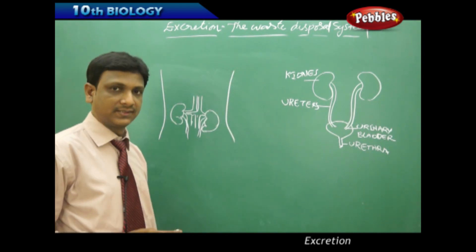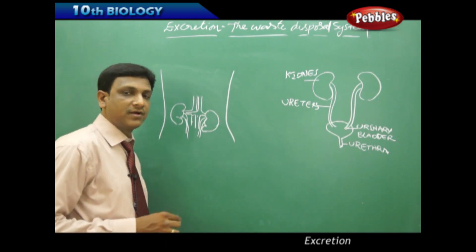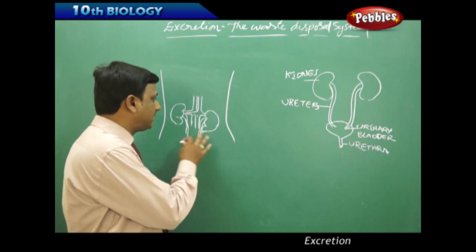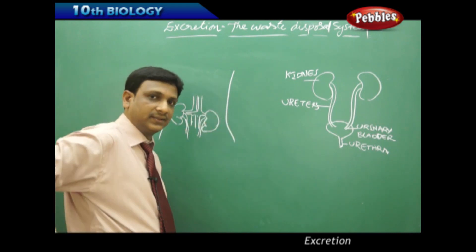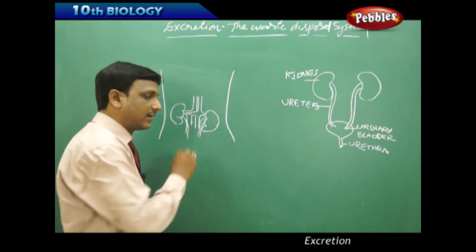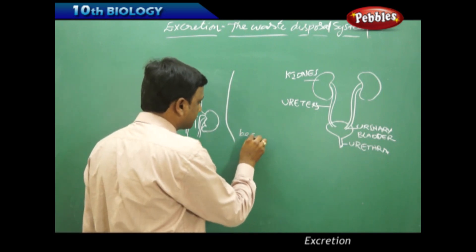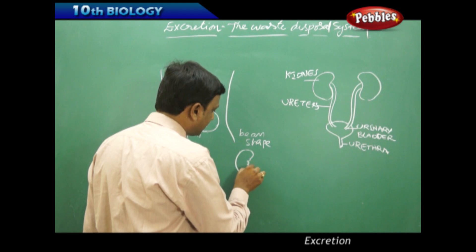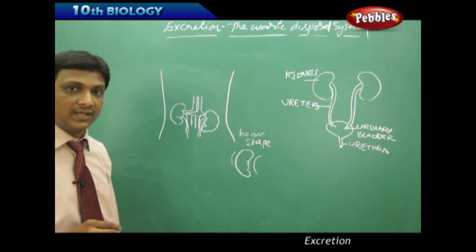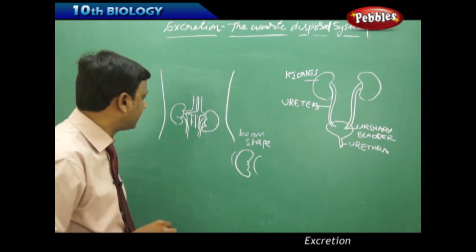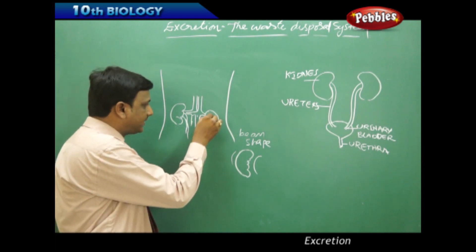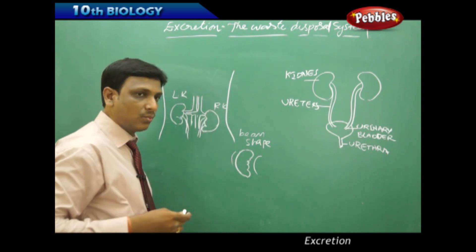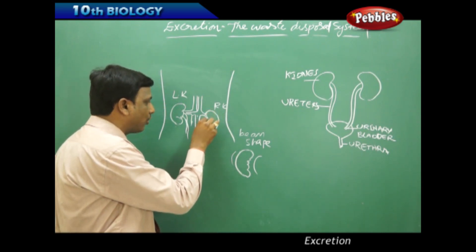In humans, there are a pair of kidneys — two kidneys — present in the abdominal cavity, attached to the dorsal body wall on the back side. These are bean-shaped organs: convex on one side and concave on the inner side. They are reddish-brown in color. The right kidney is positioned slightly lower than the left kidney because the liver on the right side occupies space.